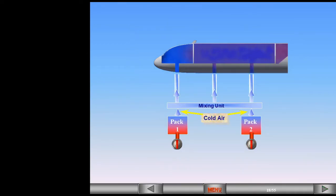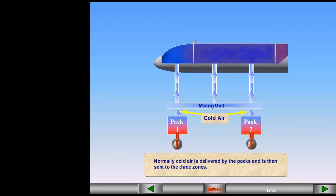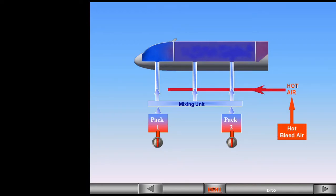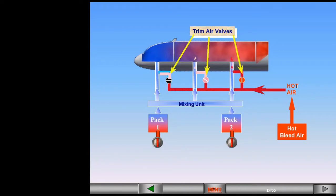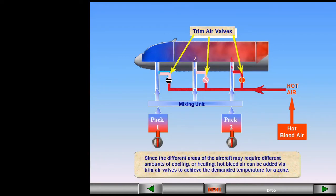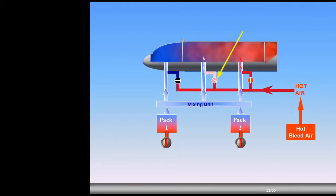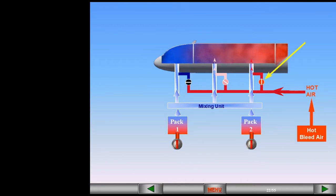Normally, cold air is delivered by the packs and is then sent to the three zones. Since the different areas of the aircraft may require different amounts of cooling or heating, hot bleed air can be added via trim air valves to achieve the demanded temperature for a zone. In the example shown, no hot air is being added to the cockpit zone, some hot air is being added to the forward cabin zone, and a lot of hot air is being added to the aft cabin zone.